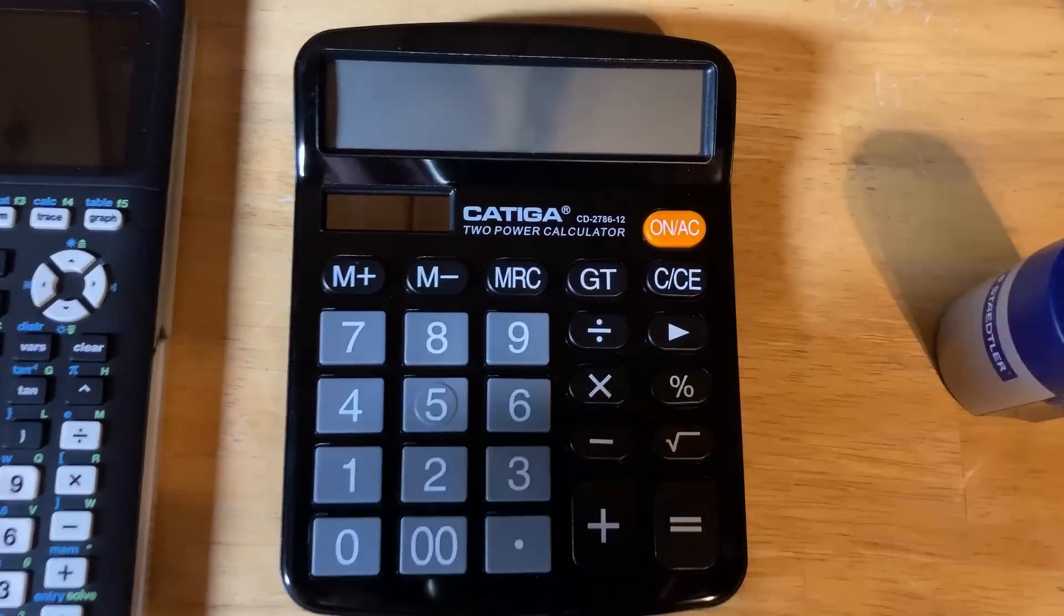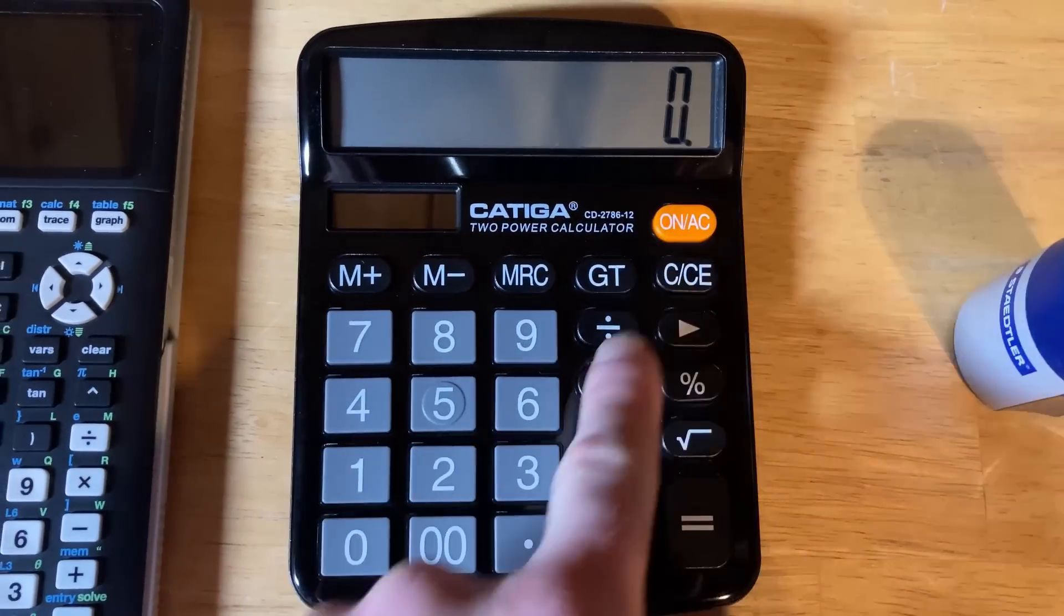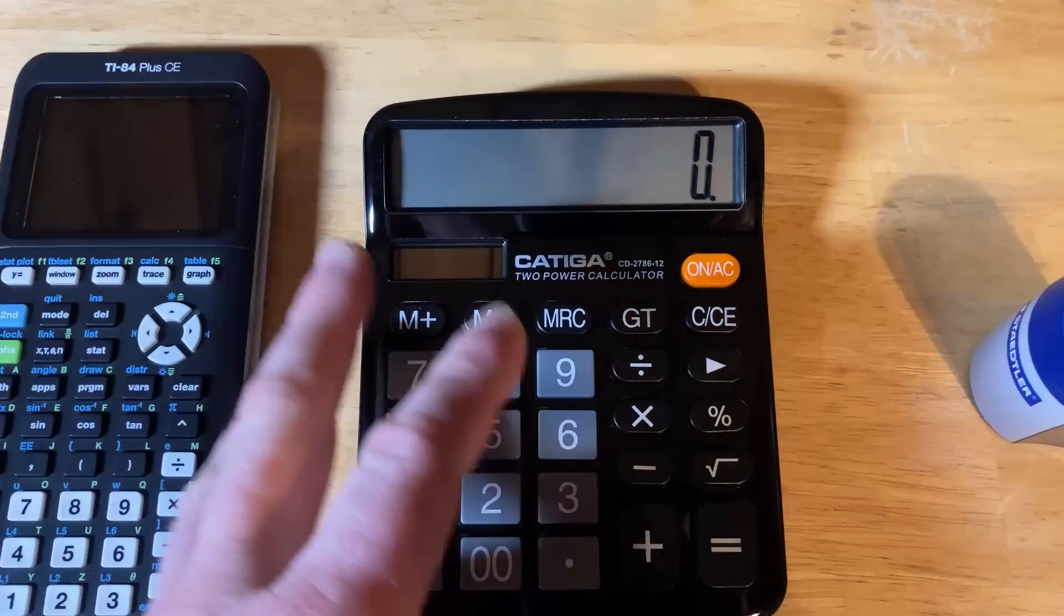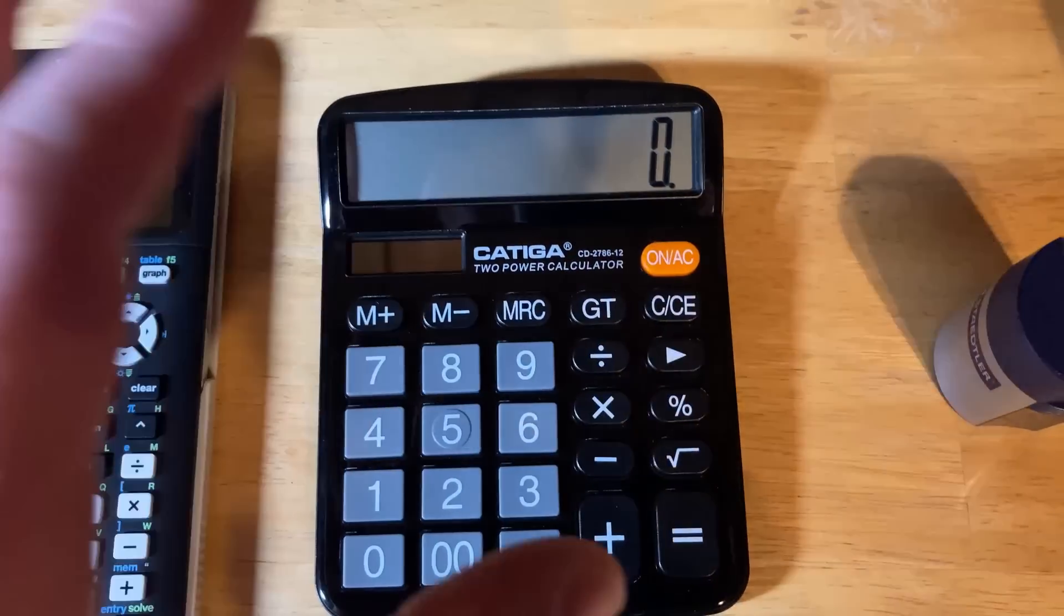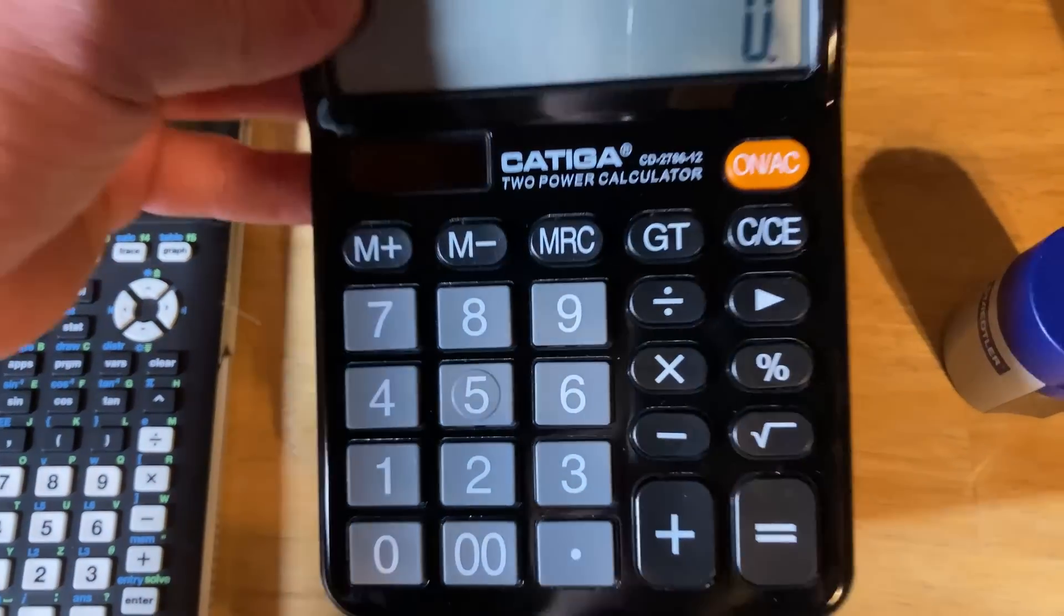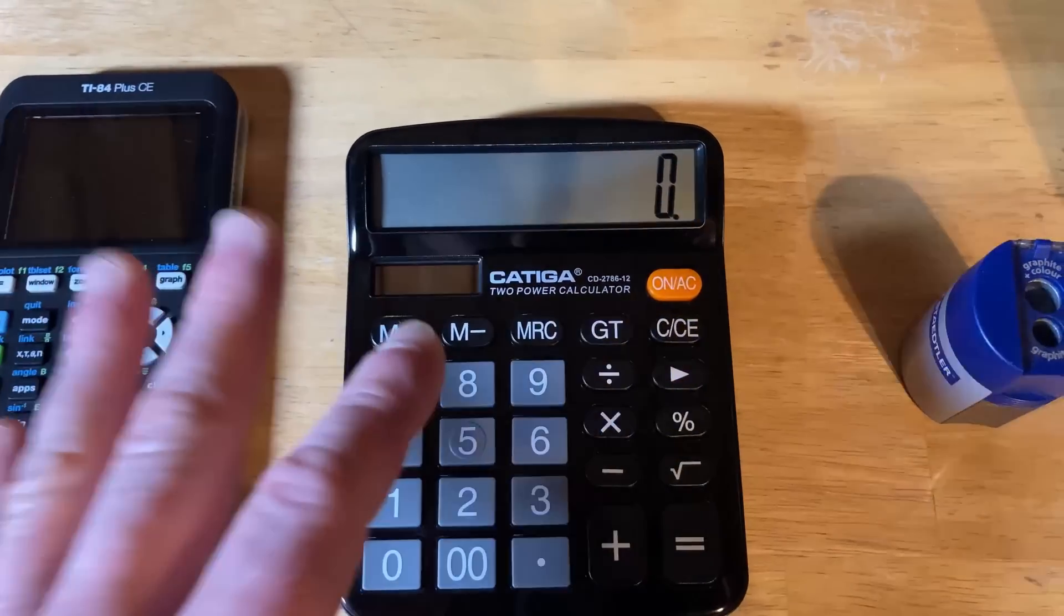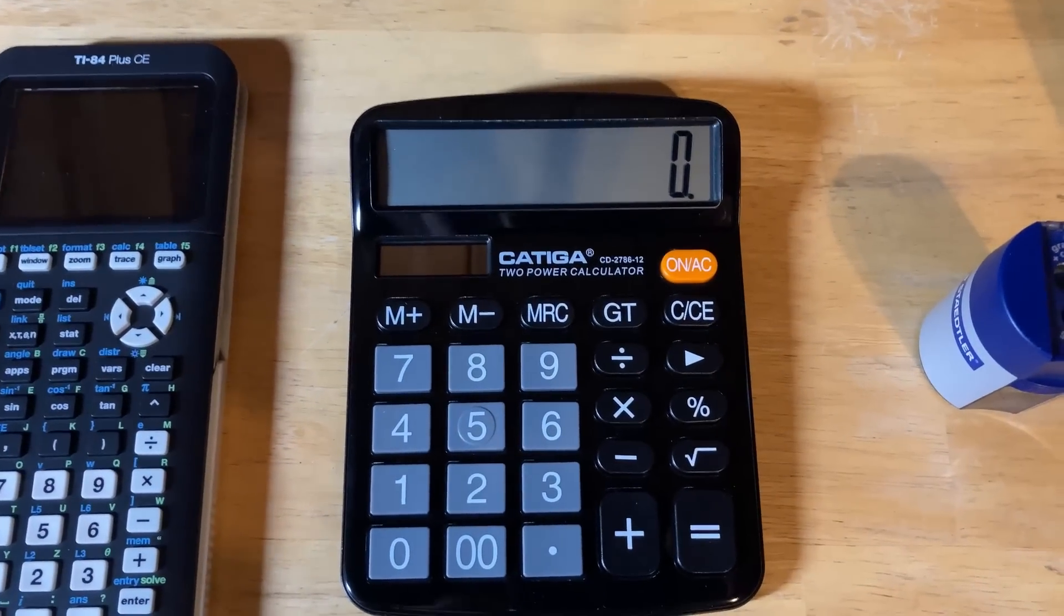A step up from that one is this one here by Katiga. This one is a little bit nicer. It's got bigger buttons, so if you are having a hard time seeing the small buttons, this can be a calculator that you can use. Again, very basic. It's not going to have trig functions. It's not going to have logarithms. Just a basic calculator for your most very basic needs.